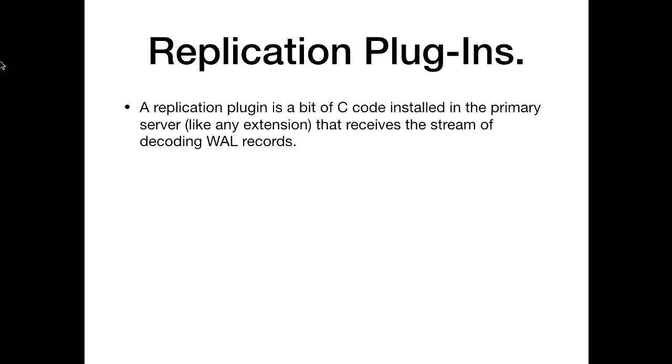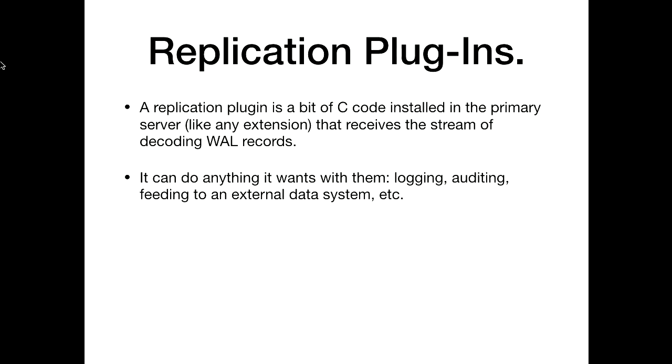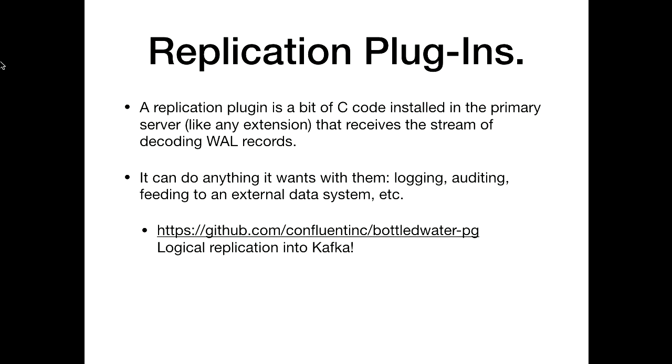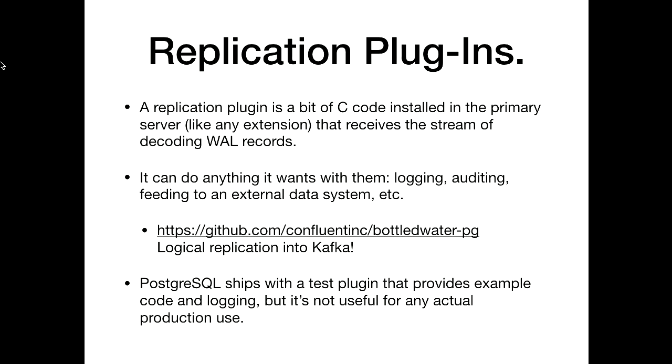This plugin is just a little bit of C code that some human being wrote and attached to the Postgres server as an extension. It receives a stream of decoded WAL records and can do anything with them — log them, do auditing, feed them to an external data system like Kafka. Postgres ships with a test plugin, but it's not really good for much except as an example — it doesn't do anything you'd actually want to do in production.